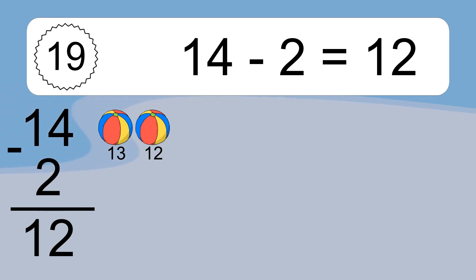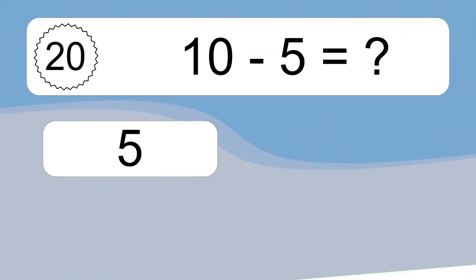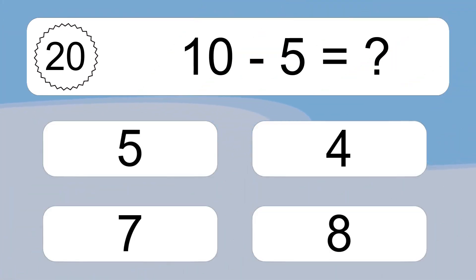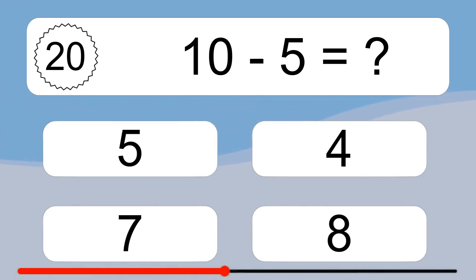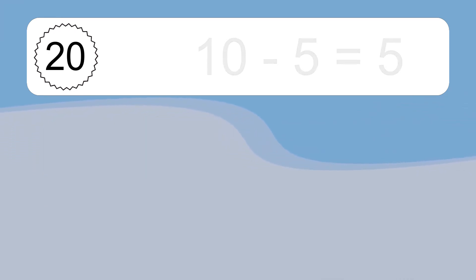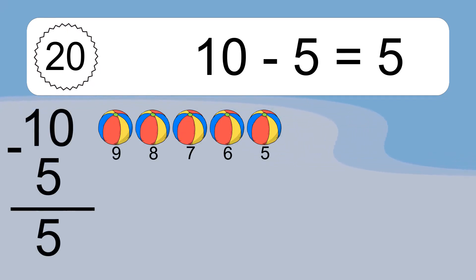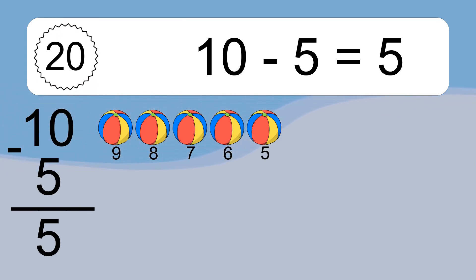10 minus 5 equals what? 10 minus 5 equals 5. Let's count it: 9, 8, 7, 6, 5.